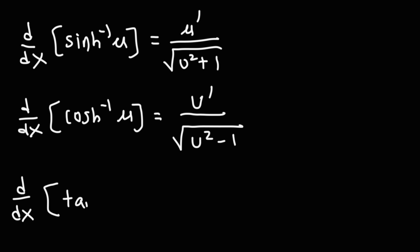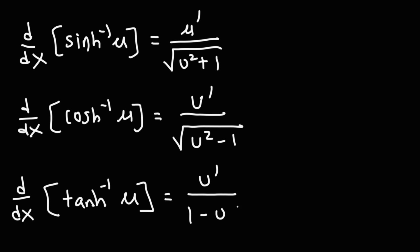Moving on to tangent: the derivative of the inverse hyperbolic tangent function of u is going to be u prime over 1 minus u squared. There's no square root for that.